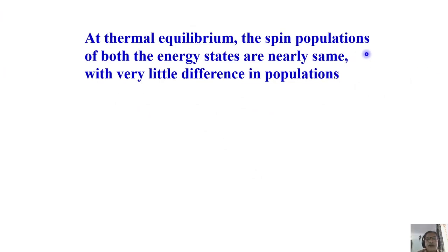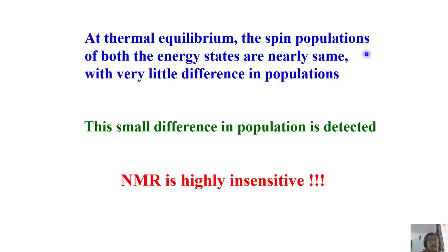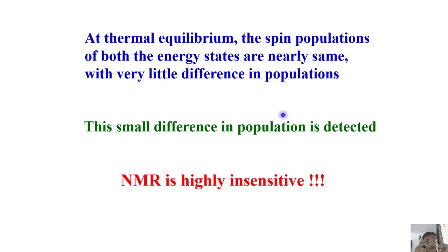NMR is a highly insensitive technique — the population difference is so small that if you want to detect the NMR signal it is very difficult. However, there are many ways of increasing the sensitivity. That small population difference, though it seems tiny, is more than sufficient if we can detect the signal and do all our experiments. Though the population difference is negligibly small, it is still detectable. There are many ways to enhance the sensitivity.